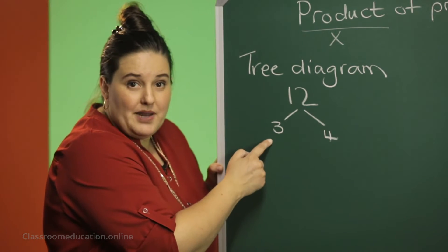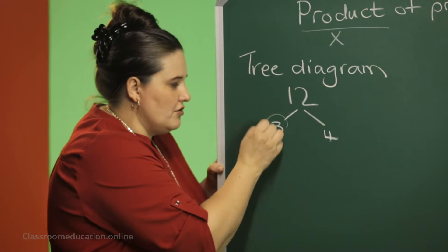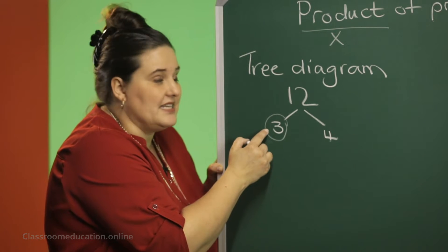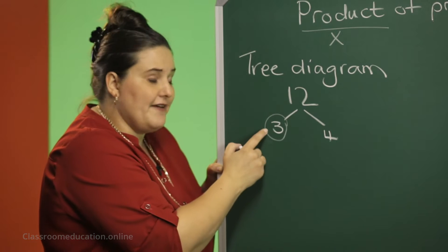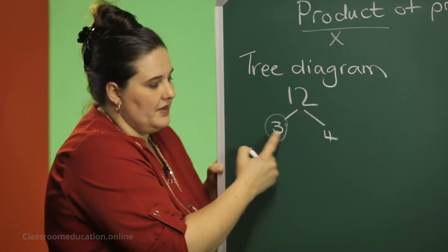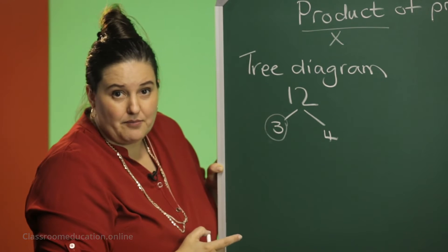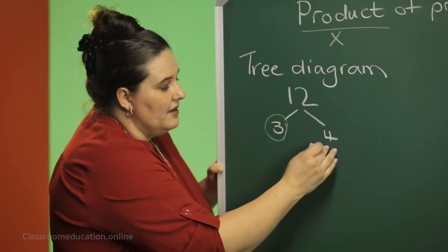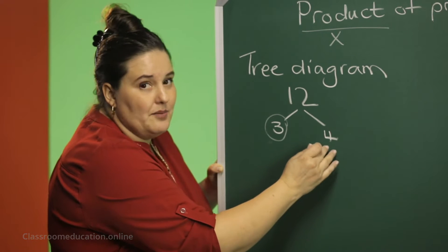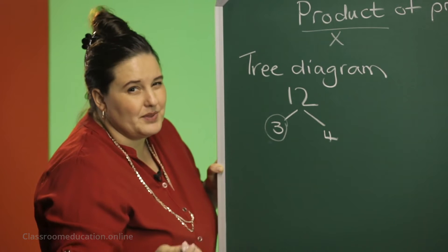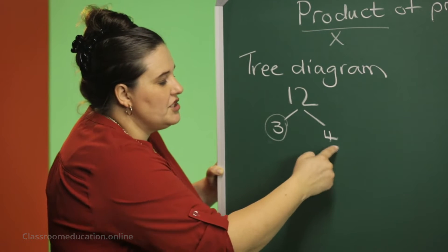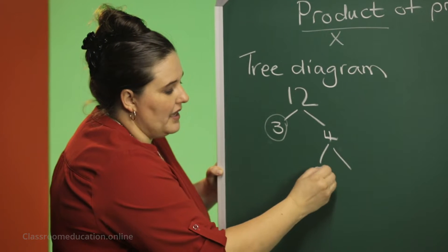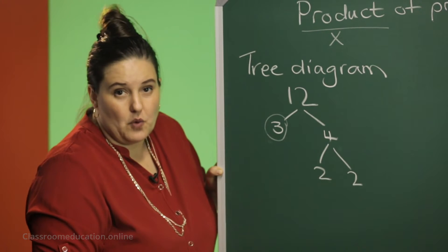Is 3 a prime number? Yes. So you can stop there, which means that 3 is a prime factor of 12. It's a factor of 12 and it's also a prime number. Is 4 a prime number? No. Which means you can actually multiply 2 numbers to get 4, and those 2 numbers might be prime numbers. What should I multiply to get 4? I can multiply 2 times 2 to get 4.